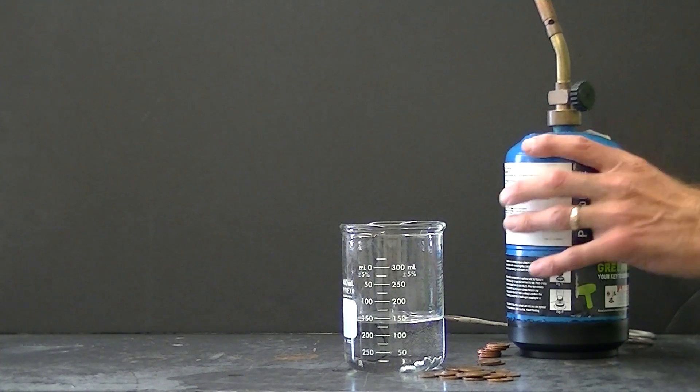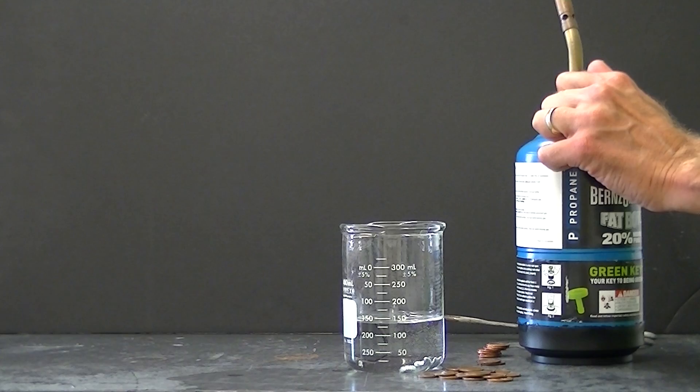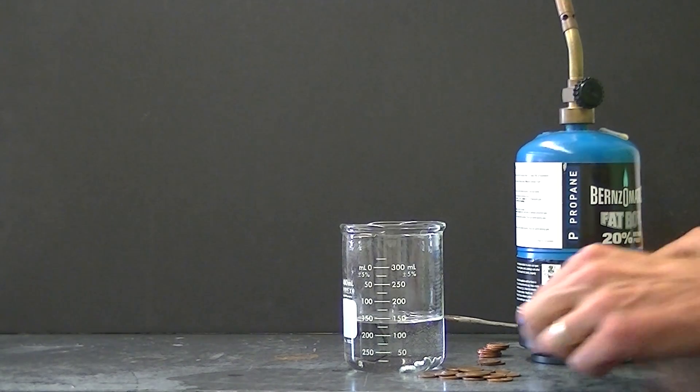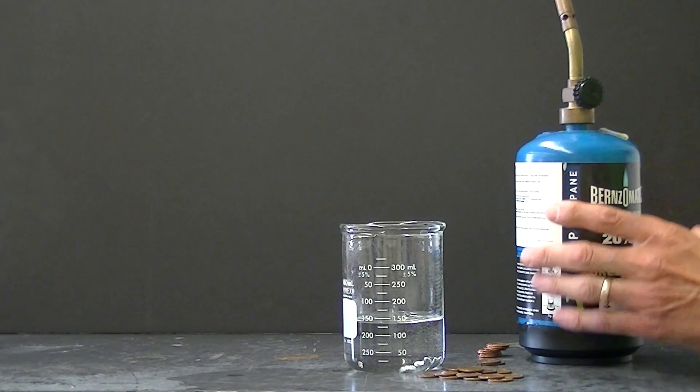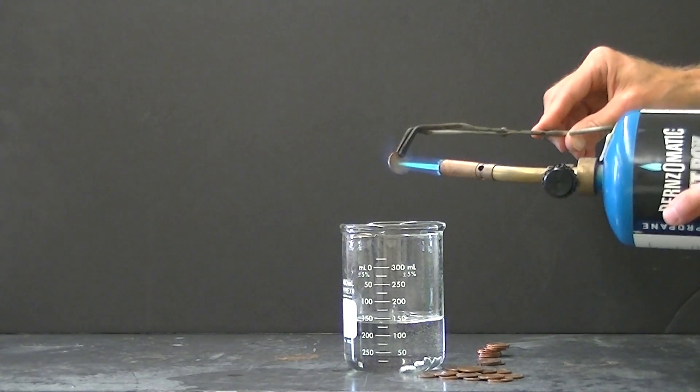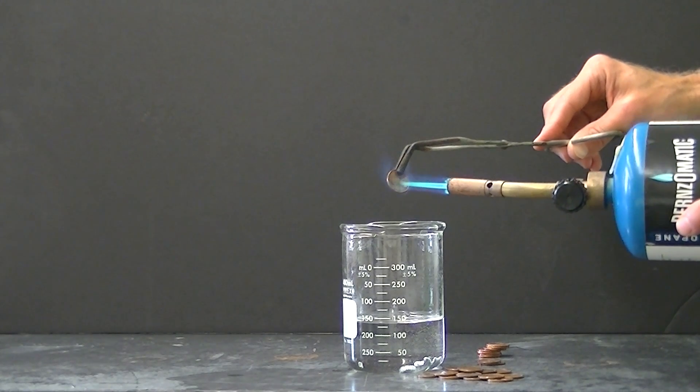Okay now I'm going to repeat this experiment but this time instead of trying to melt new pennies I'm going to try to melt old pennies. Now keep in mind these old pennies are comprised almost entirely of copper. And copper melts at 1,085 Celsius.